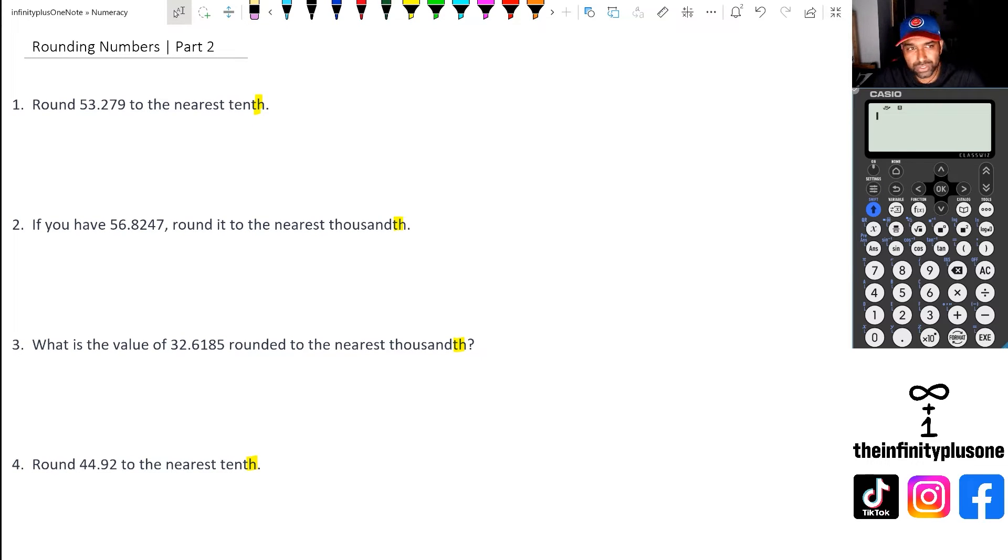Folks, I know when people do this question, they always get it mixed up. They see 53.279, and they think tenth, tens column is somewhere here. I think this is what people get mixed up with right now. The five is actually in the tens column.